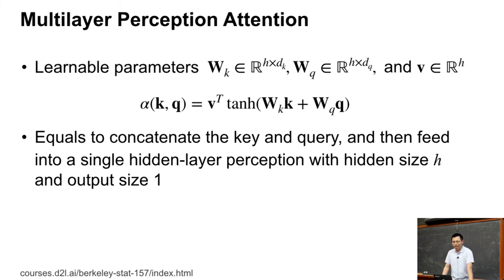This is why we call it multi-layer perceptron attention, because it's actually equals to a multi-layer perceptron. If we think about it, we just concatenate the key and the query in the dimension length to get d_k plus d_q vector and feed it into a single hidden layer multi-layer perceptron. The hidden size is h, and we have no bias, which you don't have bias in here. The activation function for the hidden layer is tangent. Then we got the results. Also, the output size is equal to one, so we got a single scalar for the score. That is called multi-layer perceptron attention.